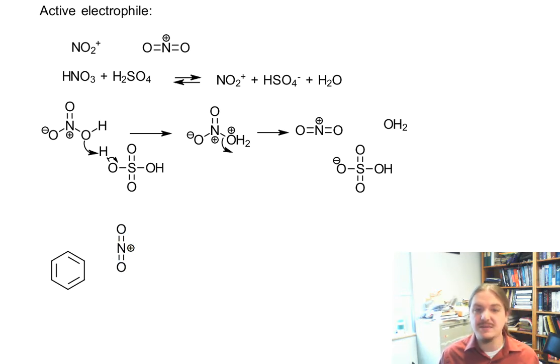One of the pi bonds in benzene goes after that positive charge in the electrophile. Because nitrogen has four bonds and doesn't want any more than four bonds, we need to break one of the nitrogen oxygen bonds.